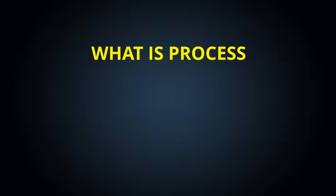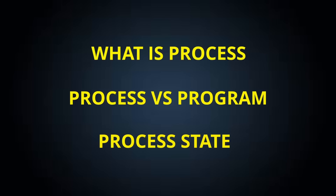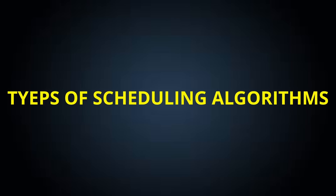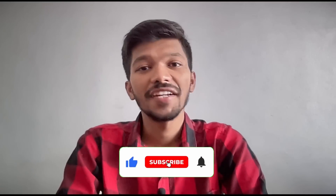From the Process topic, prepare: what is a process, the difference between a process and a program, and the types of process states. Deadlock is a small, theory-based topic but has a high chance of being asked. Prepare: what is a deadlock, when does a deadlock occur, the four necessary conditions of deadlock, and how to prevent deadlock. Finally, and most importantly, types of scheduling algorithms — know at least three to four types along with their applications.